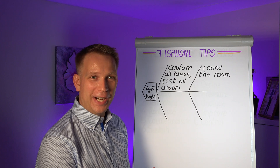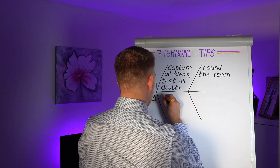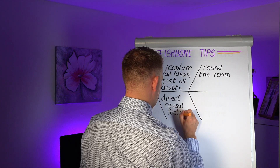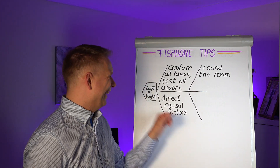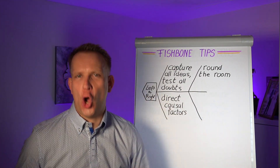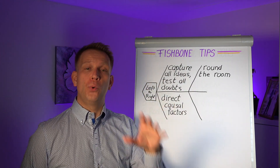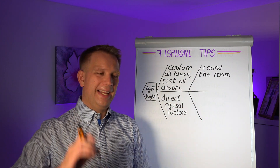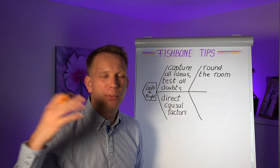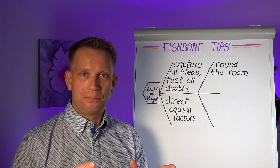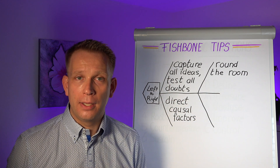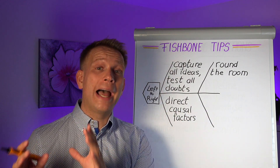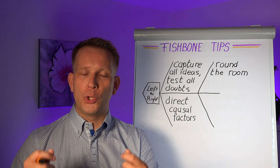On to tip three of our 4M fishbone tips. You want to capture direct causal factors, or direct causes. The main thing is: do not go for the root cause when you're doing this brainstorm in your fishbone. What you want is physical causes, direct people mistakes - the thing that just leads to your problem. That you can check: was it really happening or not? And if those things are happening, they will almost certainly have an impact on causing your problem. That is the info you want from the fishbone.